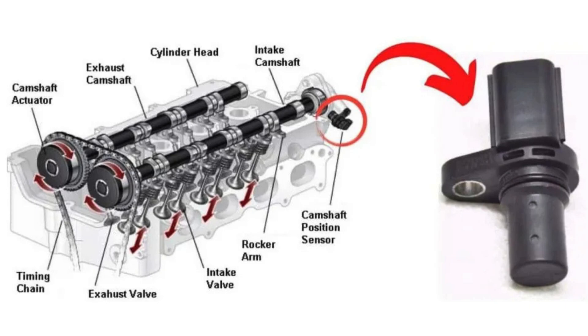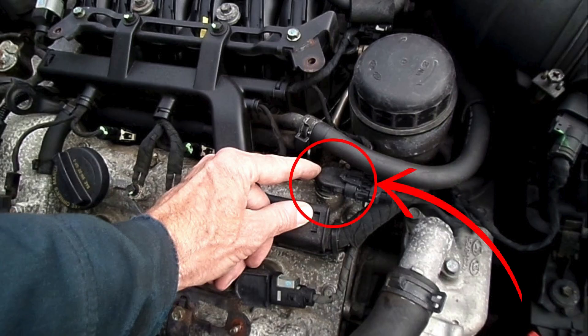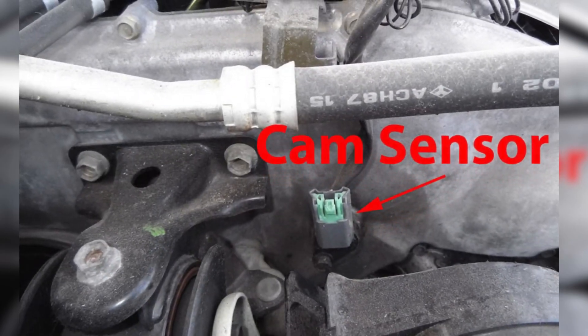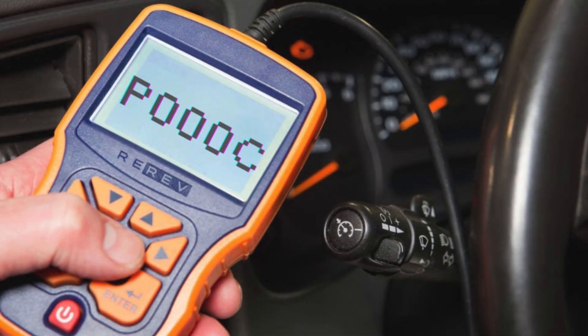Now, where exactly is the P000C sensor located? The camshaft position sensor responsible for triggering the P000C code is usually positioned close to the camshaft. Its exact location can vary depending on your vehicle's make and model.